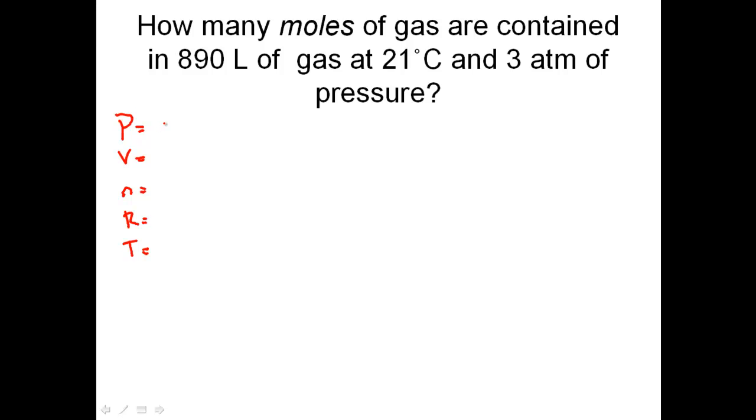P is for pressure, and the pressure is expressed as 3 atmospheres. The volume is 890 liters, and that's cool because it needs to be in liters. n stands for moles, and right now we do not know how many moles of gas we have. R is the ideal gas constant.